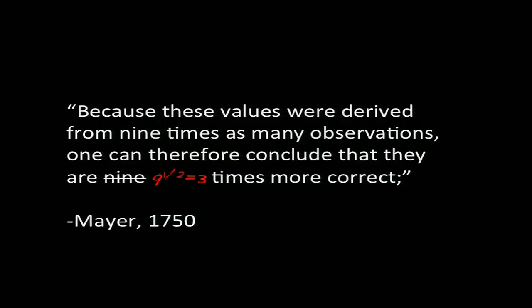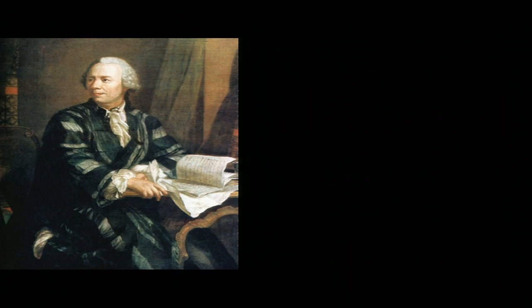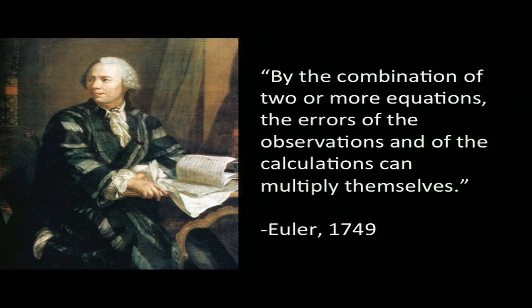We now know that Mayer got it slightly wrong. Error drops not in direct proportion to the number of observations, but with the square root of the number of observations — so his estimates were at best three times more accurate. Still, you can hardly fault the man for getting the details a little bit wrong when he had just taken the first tentative steps towards least squares regression. It's interesting to contrast Mayer with Leonhard Euler, who just one year earlier faced six equations in two unknowns and balked, writing that combining equations could cause errors to multiply. Euler — possibly the greatest mathematician of all time — could not make the conceptual leap that Mayer did.